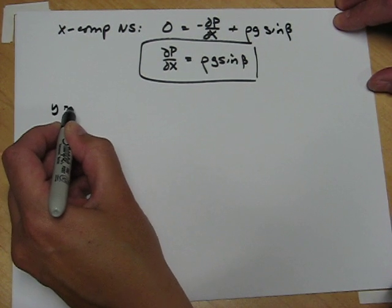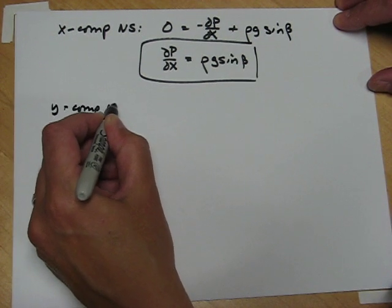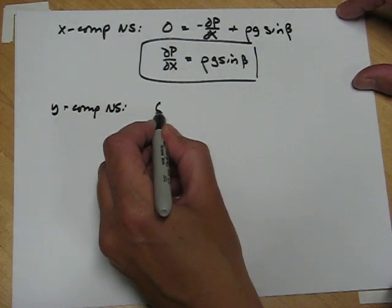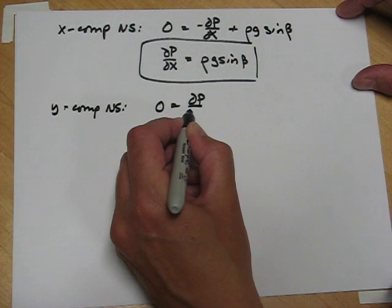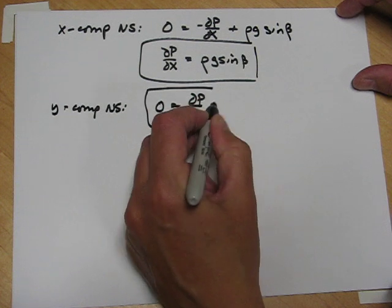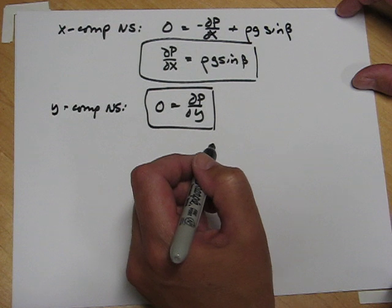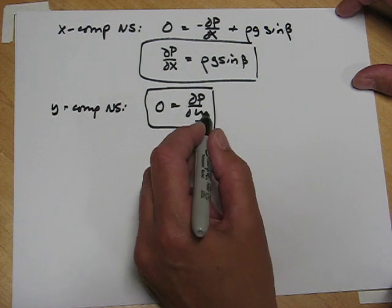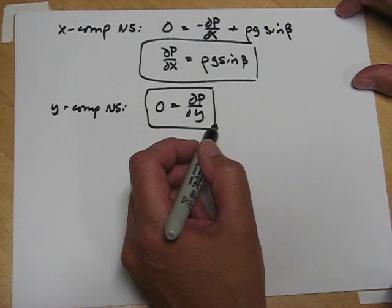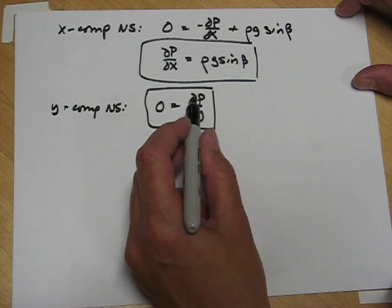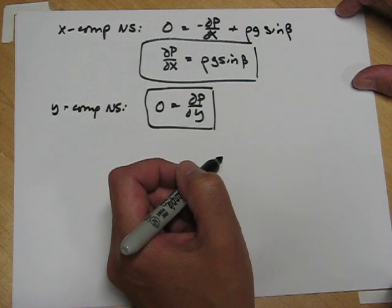The y component is even simpler. It's zero equals dp/dy. In the width direction, there may be no pressure gradient. So this component tells us that with the assumptions we've already made, it's not permissible by momentum conservation for there to be any pressure variation in the y direction.